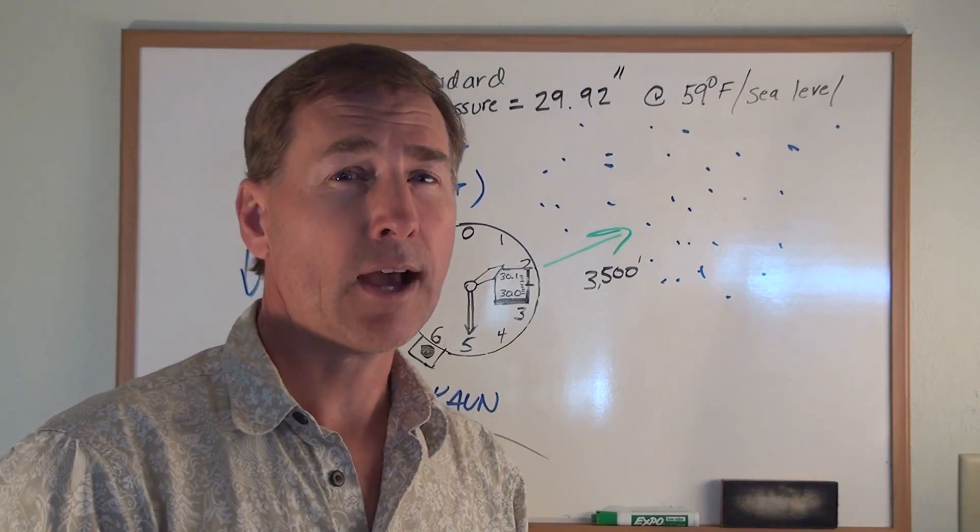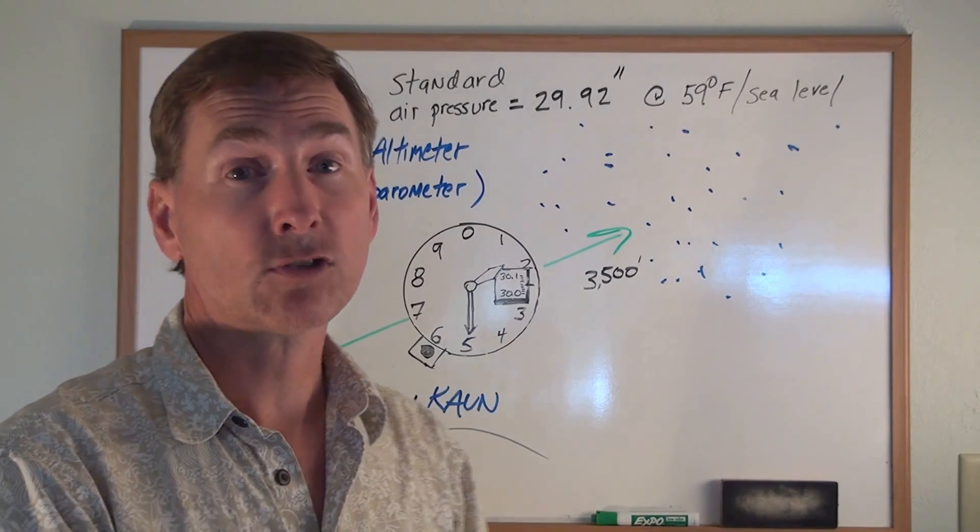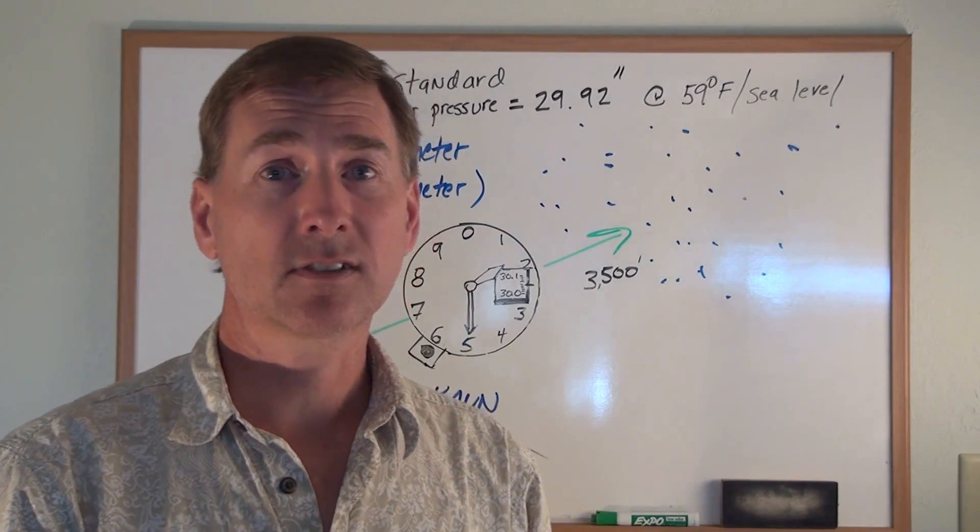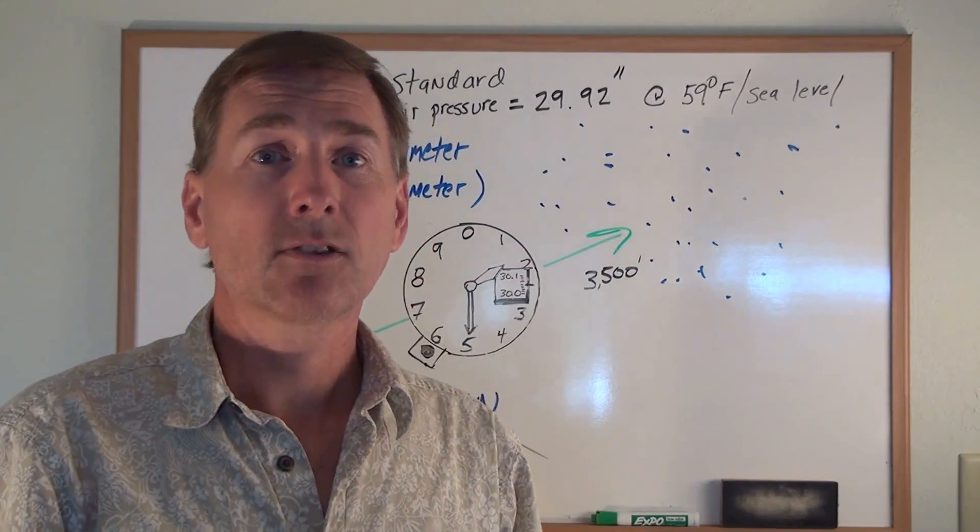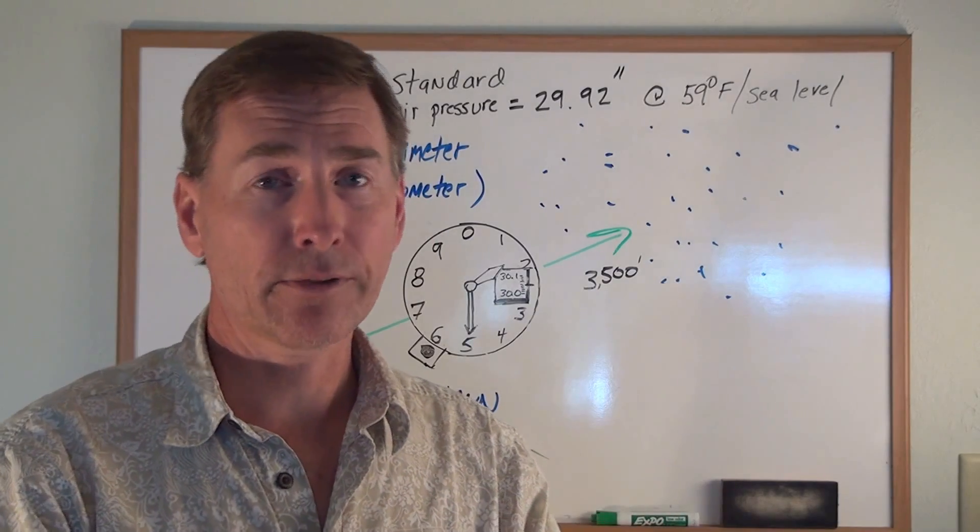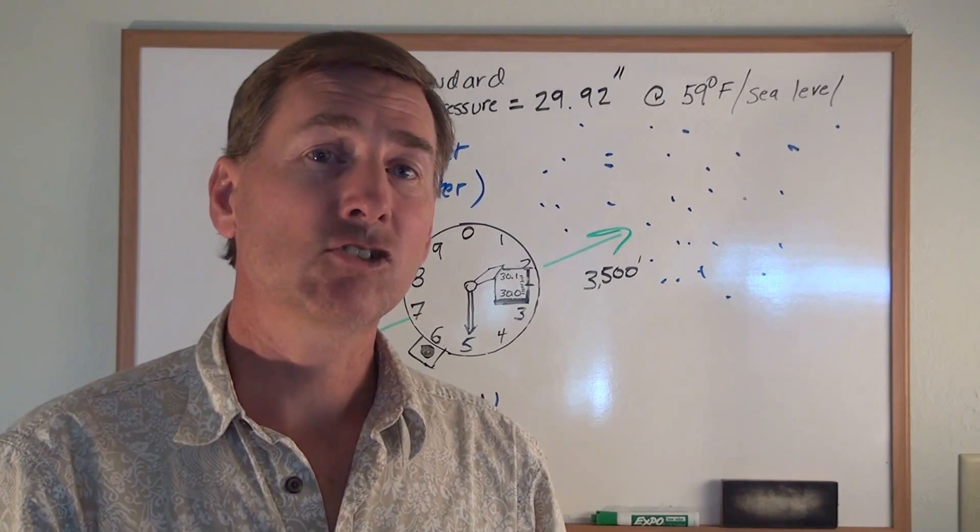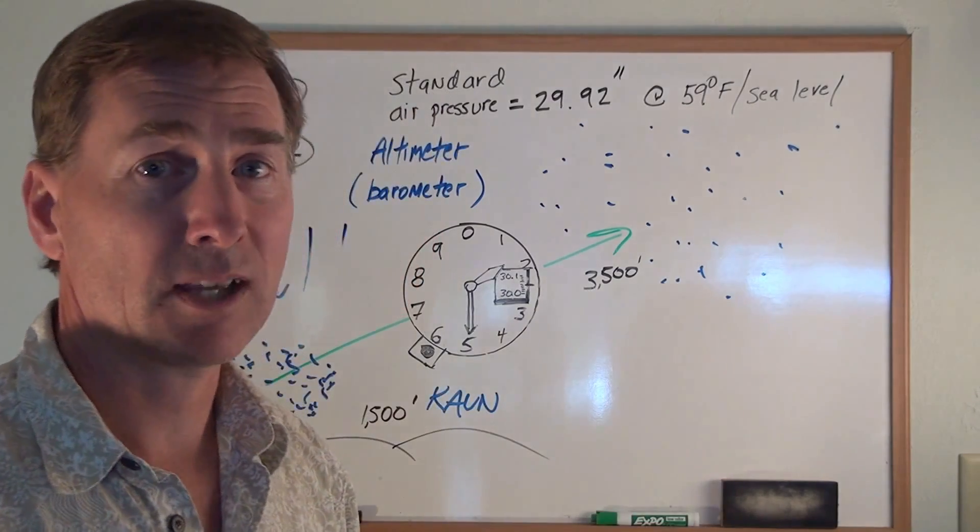So a high pressure could do that, or a storm would make you go the opposite way because it thinks all of a sudden it's gone up in elevation. So those are the two things. There's probably other things, but those are the biggies that can change the altimeter from day to day.